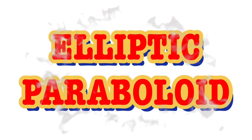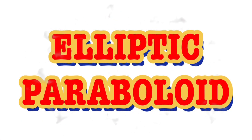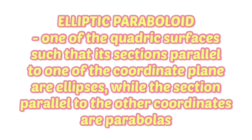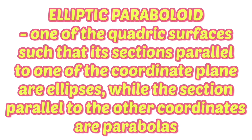Hello everyone. This video will focus on the elliptic paraboloid. An elliptic paraboloid is one of the quadric surfaces such that its sections parallel to one of the coordinate planes are ellipses, while the sections parallel to the other coordinate planes are parabolas.